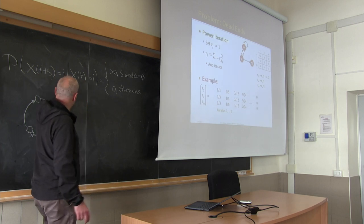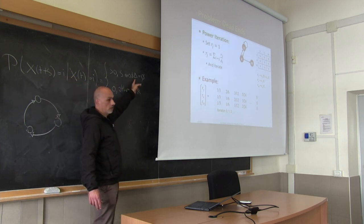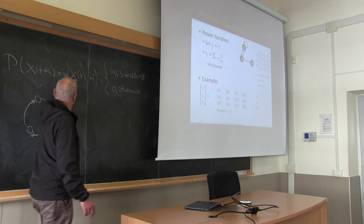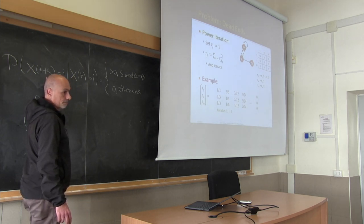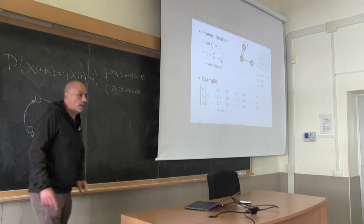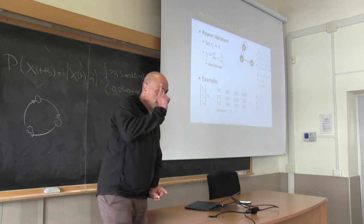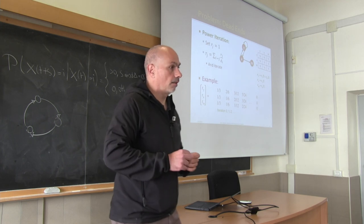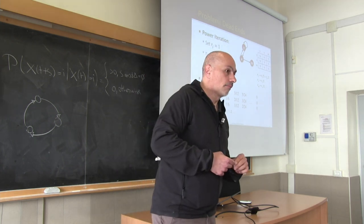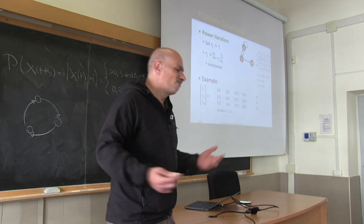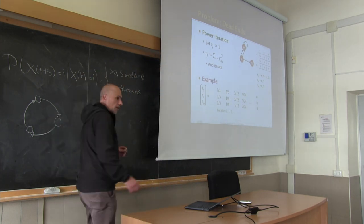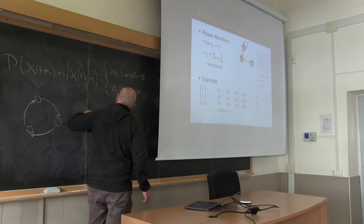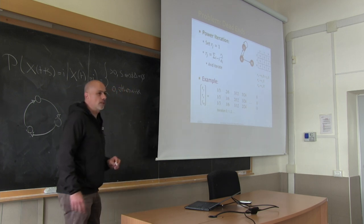If a state is periodic, it means there is some integer delta such that you can only visit it at multiples of delta time steps. Whenever a Markov chain has even a single state like this, the Markov chain is said to be periodic. With periodic Markov chains, in general, the distribution at time t has no defined limit.